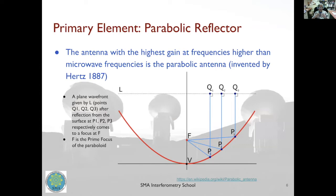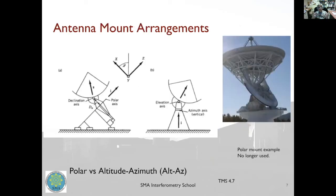Now let's move to a parabolic reflector, which is the primary element of a radio telescope. We use a parabolic reflector because it is the antenna with the highest gain at microwave frequencies and higher. To understand how it works, consider conic sections: a plane wavefront hitting the parabolic surface at multiple points comes to a focus — the prime focus of the telescope. Each conic section has two foci; the other focus of the parabola is at infinity.